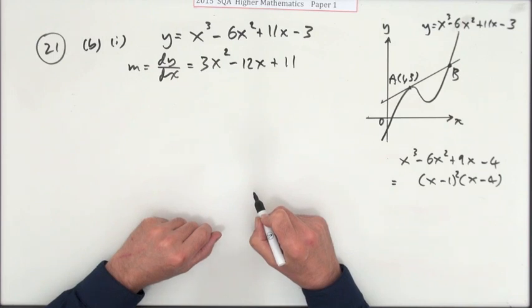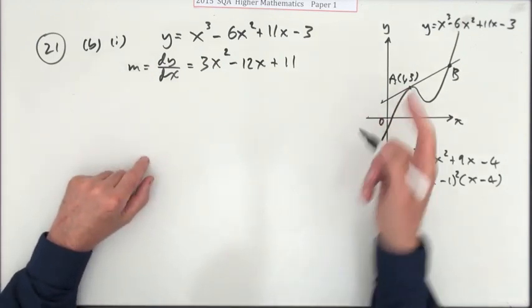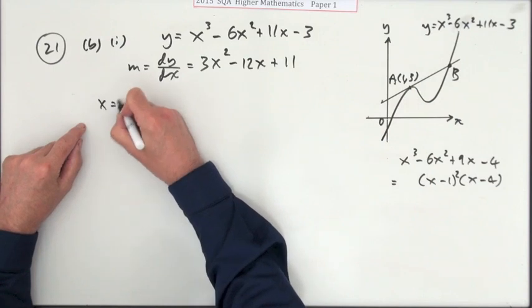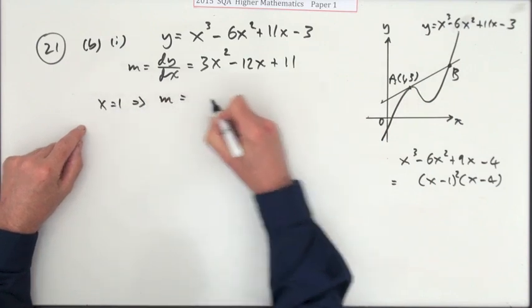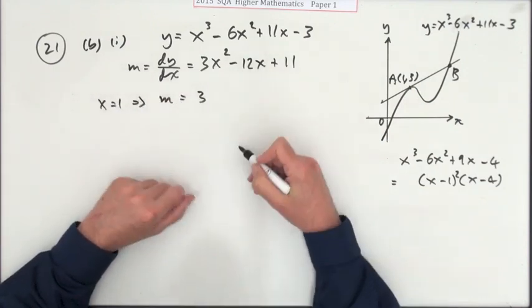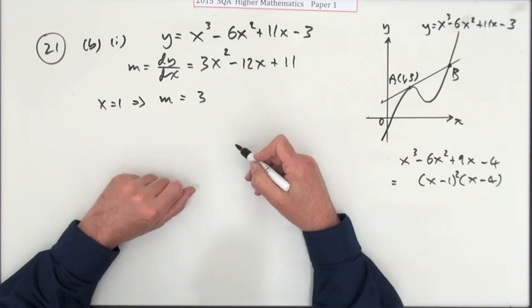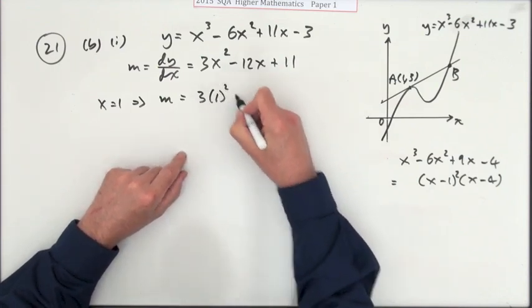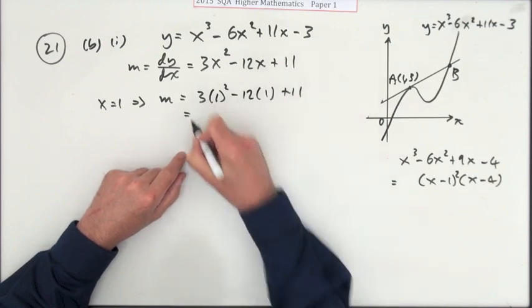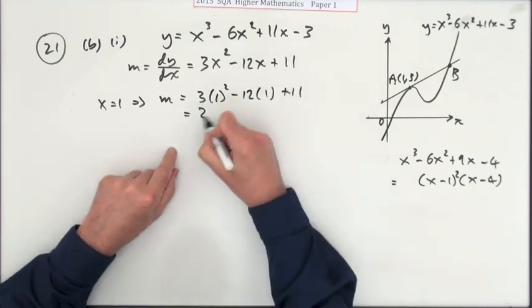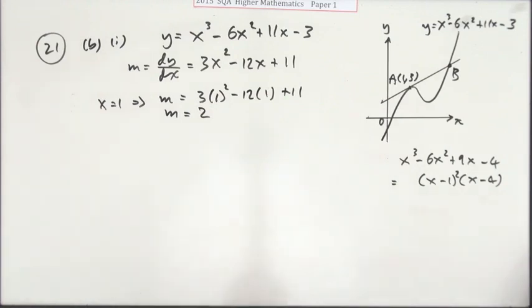Now I can work out the gradient at the point when x is 1. So if x is 1, that means the gradient will be 3 times 1² - 12(1) + 11. So that's going to be 3 - 12 + 11 = 2. The gradient is 2.